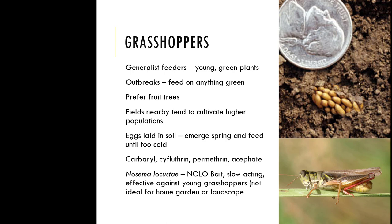There are products you can use as a foliar spray that will kill grasshoppers as they feed — those would be carbaryl, cyfluthrin, permethrin, and acephate. There is a bait called Nolo Bait that is slow acting and can be effective, but it's better if you have a field or pasture land nearby and you know when the young grasshoppers are emerging. For that reason it's really not ideal for the home garden or landscape — other options yield better results.